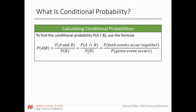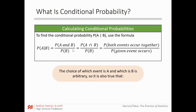Here is the definition and formula for conditional probability. The probability of A given B uses the formula: P(A|B) = P(A and B) / P(B). You already know B happened, so you're dividing by the probability of B. Another way to write this is P(A ∩ B) / P(B), where A intersect B means both events occur, divided by the probability of the given event. The choice of A and B is arbitrary — you can flip them: P(B|A) = P(B ∩ A) / P(A).